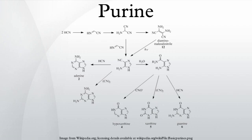History: the word purine was coined by the German chemist Emil Fischer in 1884. He synthesized it for the first time in 1899. The starting material for the reaction sequence was uric acid, which had been isolated from kidney stones by Scheele in 1776.